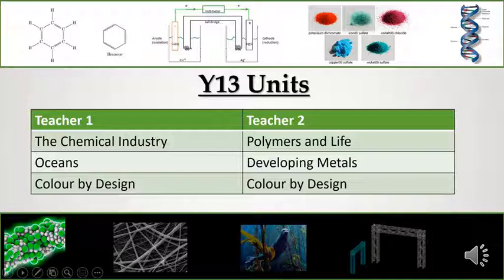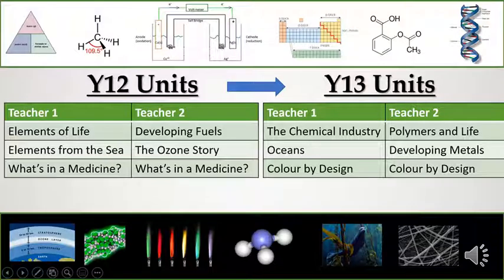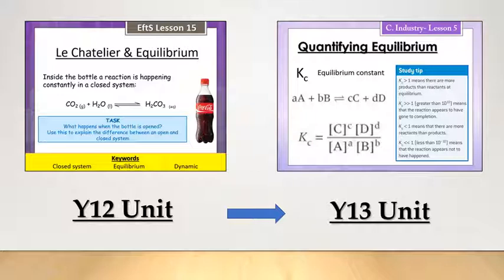These are the units that are covered in year 13, run in a very similar format to year 12 with two teachers and two parallel units. The polymers and life topic overlaps with biology A-level, covering ideas such as DNA, amino acids, and protein structure. A lot of our A-level chemists are also studying A-level biology. What's really nice is also the drip-feed approach to the course — chemical ideas are introduced in an early unit and reinforced later on. For example, Elements from the Sea introduces chemical equilibria, which is met again at A2 in the chemical industry unit.